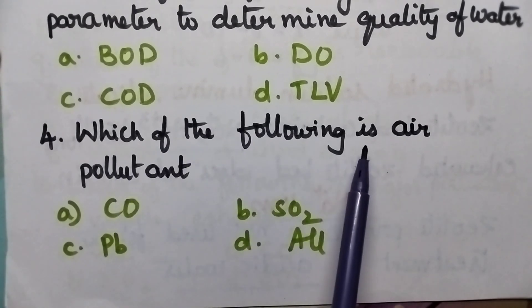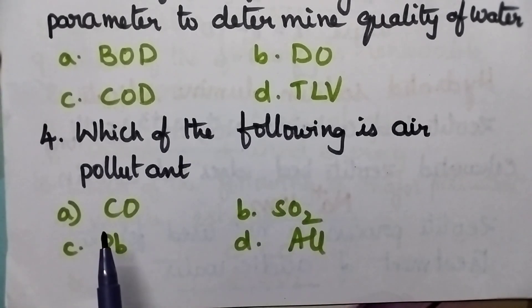Which of the following is air pollutant? A: Carbon monoxide, B: Sulphur dioxide, C: Lead, D: All.